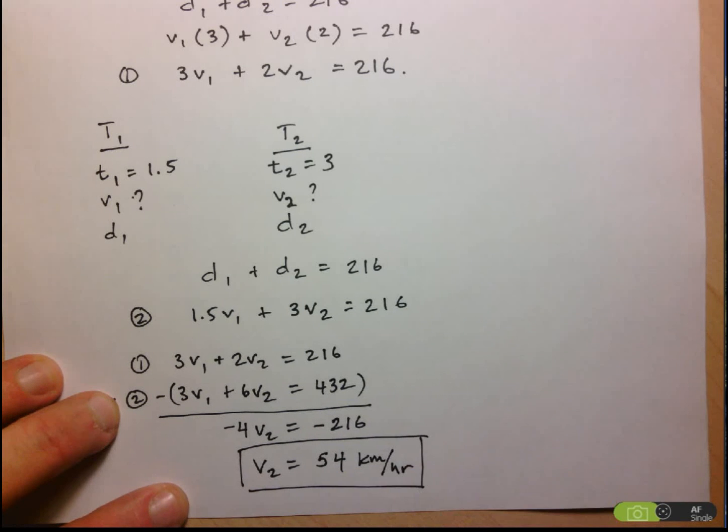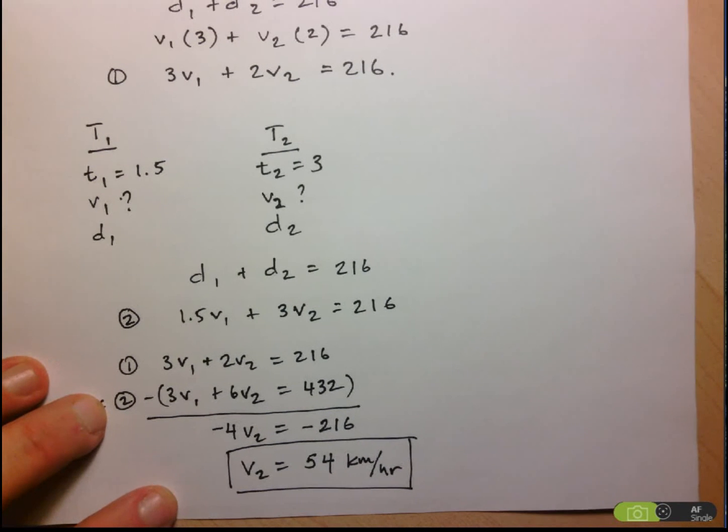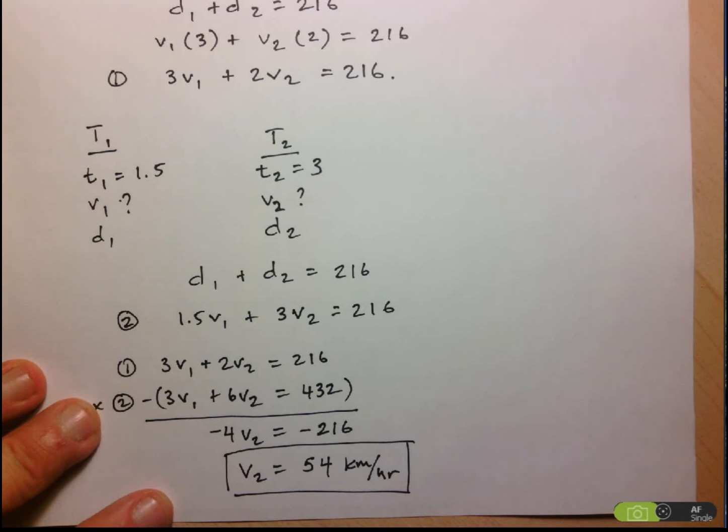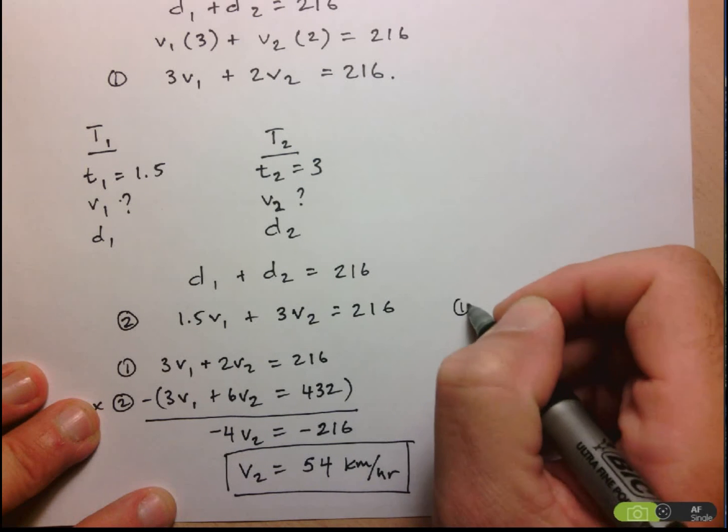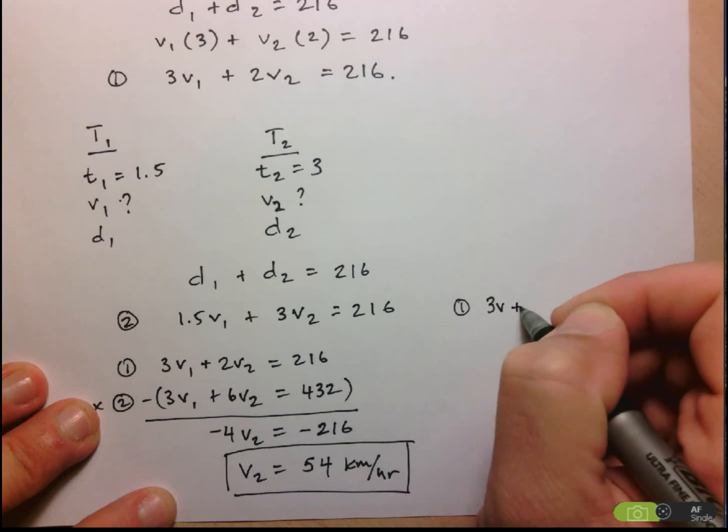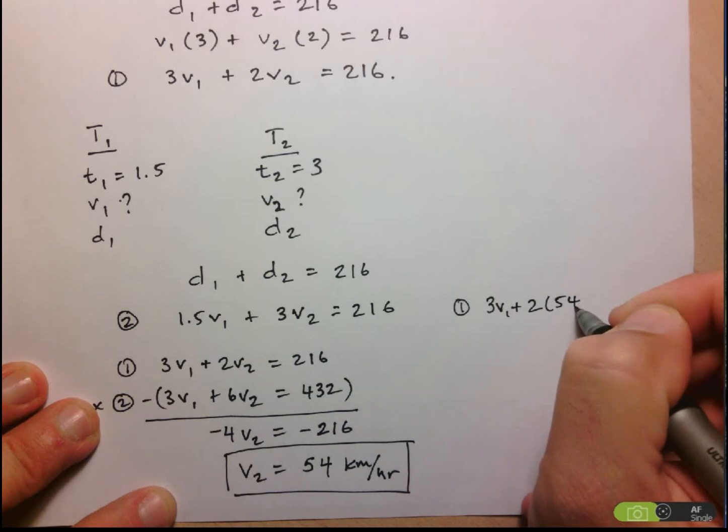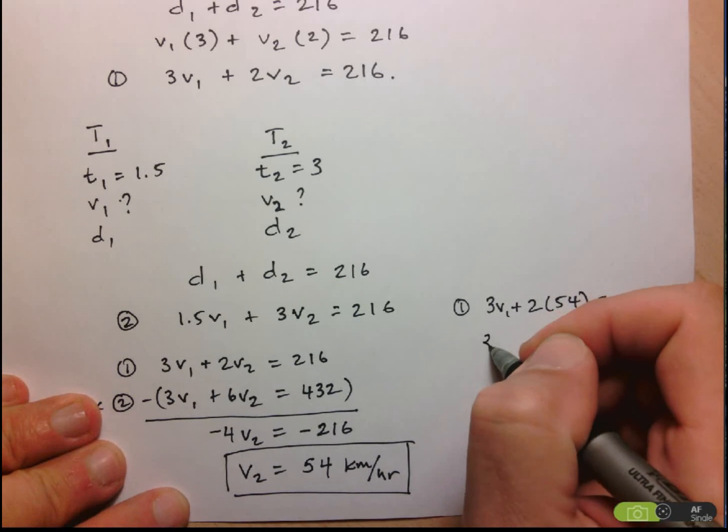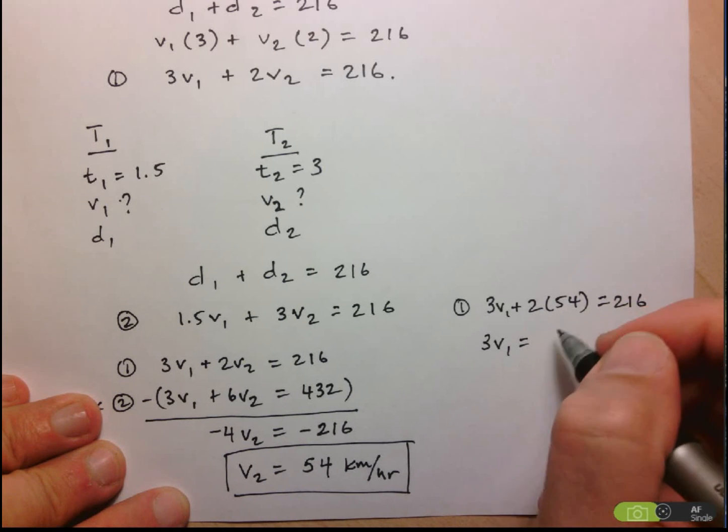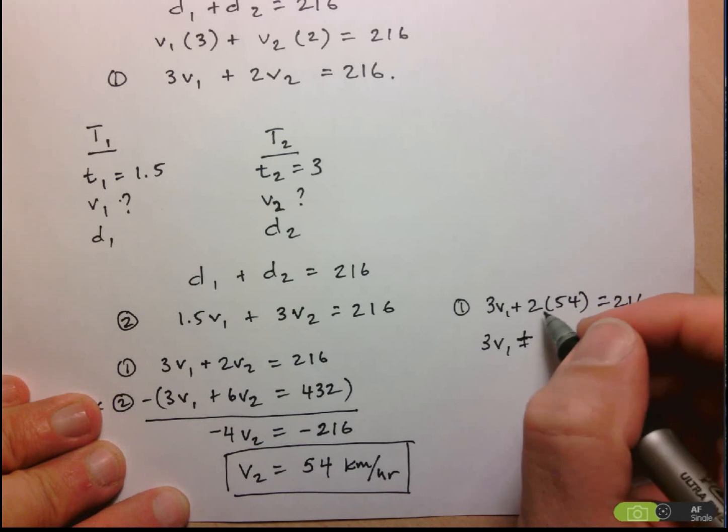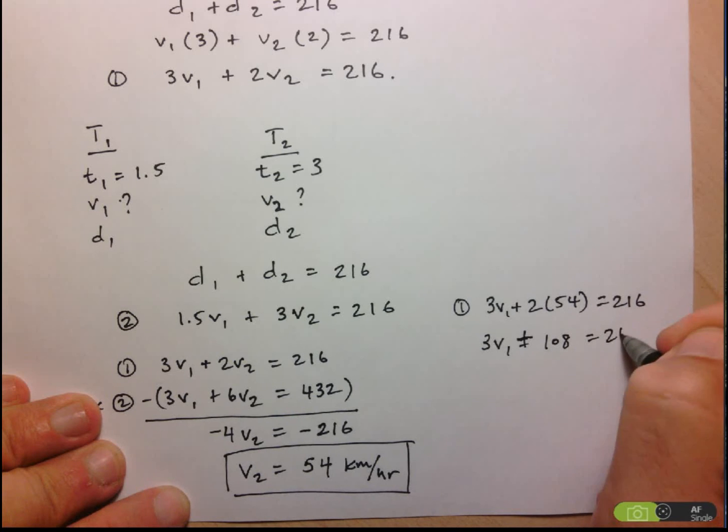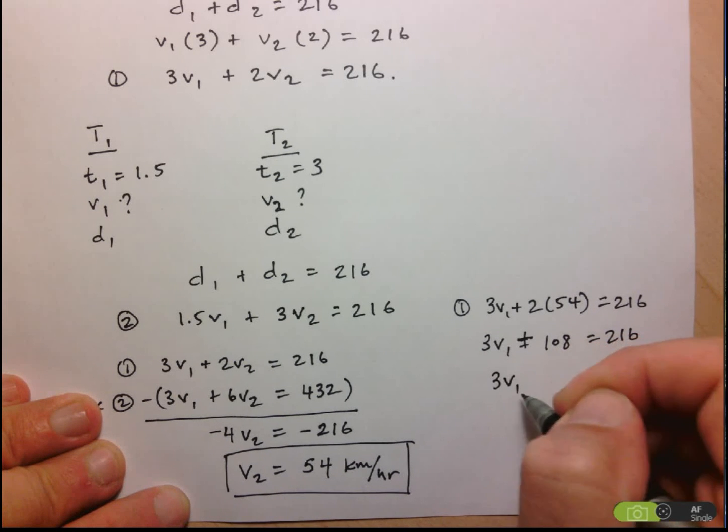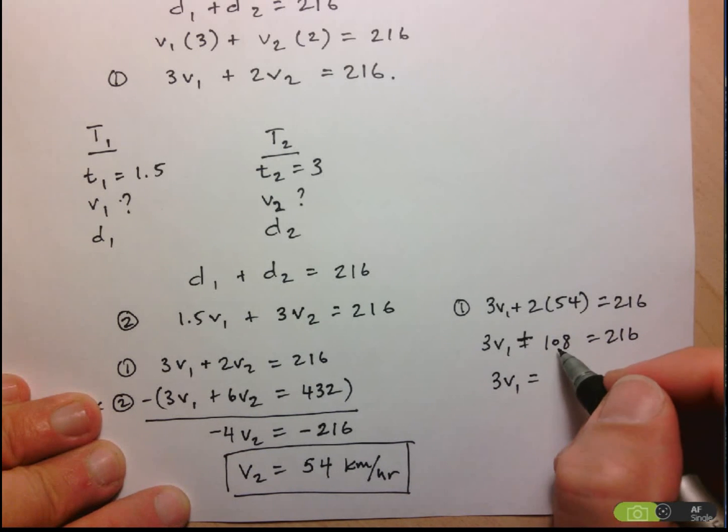So there's half of my answer, and then let's stick this into one of the equations to determine V1. So I'm going to avoid the decimals, so let's use equation 1. We have 3V1 plus 2V2, which now I know is 54, is equal to 216. So I'm going to try to do this without a calculator here. 3V1 is equal to, well, 2 times 54 is 108, equals 216. So 3V1 is equal to 216 minus 108, so it's just 108.